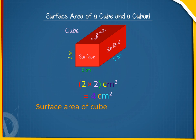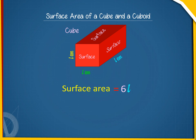So, the surface area of the cube is 6 by 4 cm square, i.e. 24 cm square. If L denotes the length of an edge of a cube, its surface area is 6 L square.